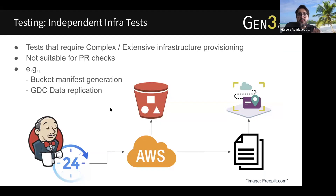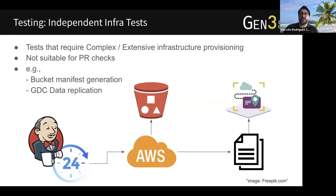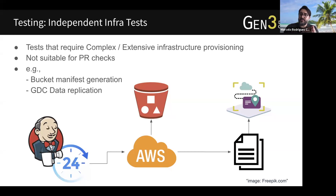We'll talk about independent infrastructure tests. Some of our tests are very computationally intensive and require some infrastructure. One example is our bucket manifest generation, which basically looks into a given storage bucket and produces a manifest out of every single file inside that bucket. It needs to fetch these files and run some computation to gather metadata of every single object. Because it's so computationally expensive, we do not run that for every single pull request. As part of our CI pipeline, we have a different lane for these infrastructure processes that involve heavy computation.